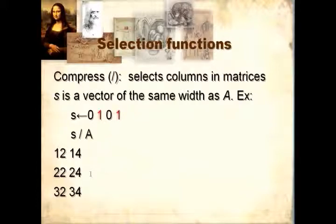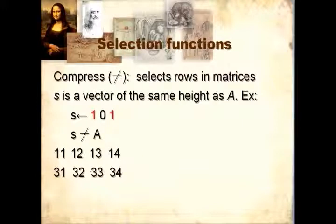Compress can also work on matrices. S must be a vector of the same width as the matrix. For example, here A is a 4-column matrix. Since S contains two 1s, we end up with a 3-row by 2-column matrix. Compress can also work on rows, but in that case you use a different character — the slash-bar, located on the same key as slash on the US or UK keyboard, accessed with Ctrl+Slash. The selection vector must be as long as the first dimension, i.e., the number of rows. So here we pick the first and the last row and end up with a 2 by 4.